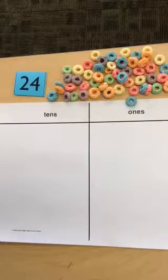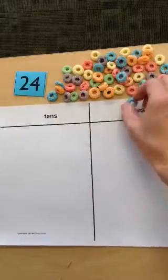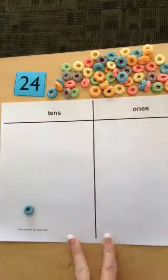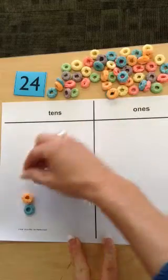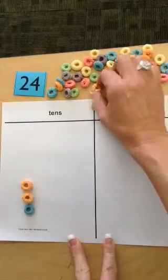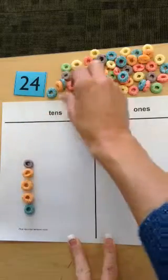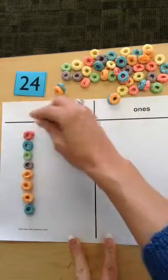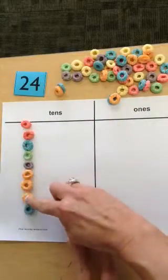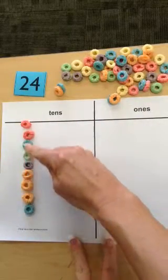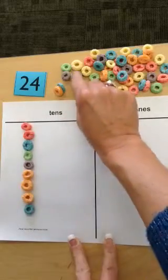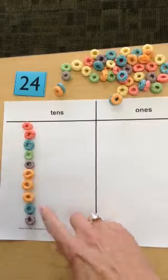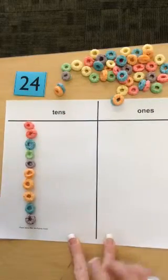We said we have 2 groups of 10 in 24. So I'm going to take 10 pieces of cereal and build a tower — counting 1, 2, 3, 4, 5, 6, 7, 8, 9, 10. There's 1 tower of 10; that is 1 group of 10. But remember, 24 needs 2 groups of 10.